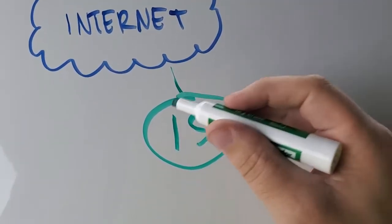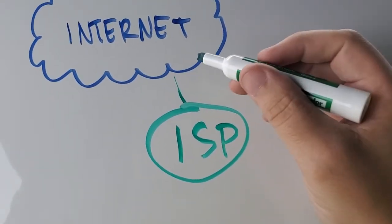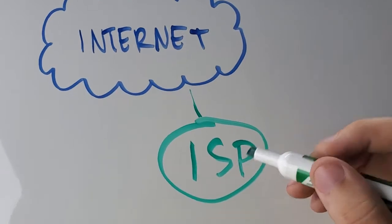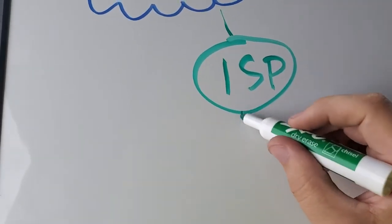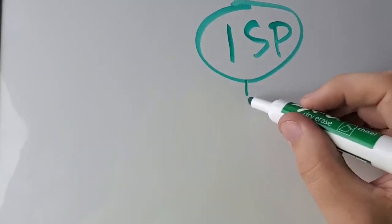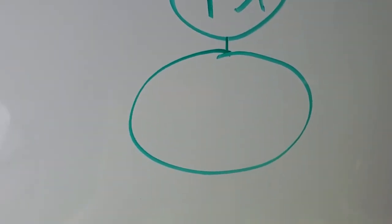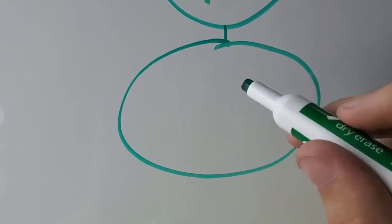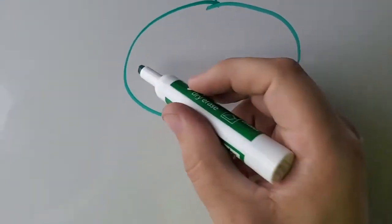Your ISP has a pool of addresses that are public addresses that can reach everything else that's on the internet. What they do is they create another network and say, okay, our public IP addresses are going to be available in this network, and you have all these customers that can sign up.